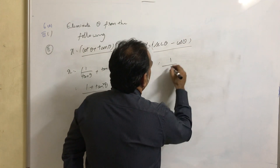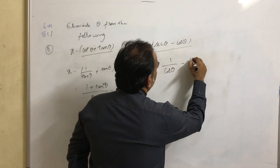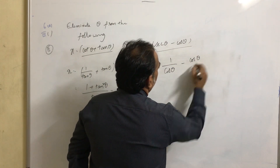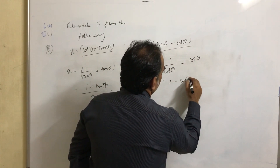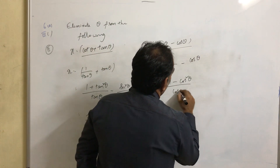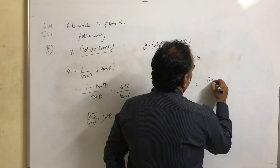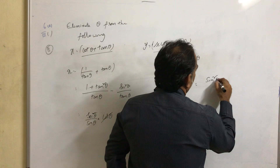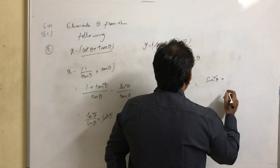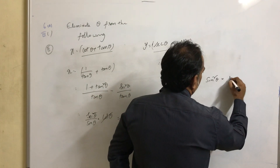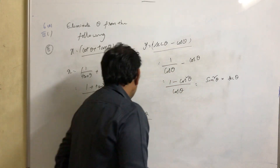Now take y. y equal to secant theta, which can be written as 1 by cos theta minus cos theta. That gives 1 minus cos squared theta by cos theta. Since 1 minus cos squared theta equals sin squared theta, y equals sin squared theta into 1 by cos theta, which is sin squared theta into secant theta.